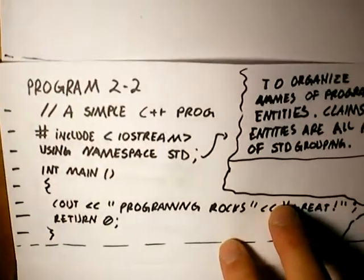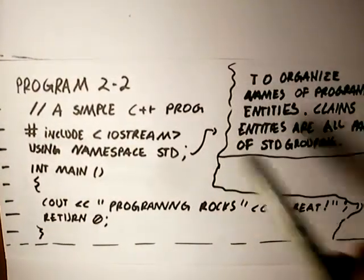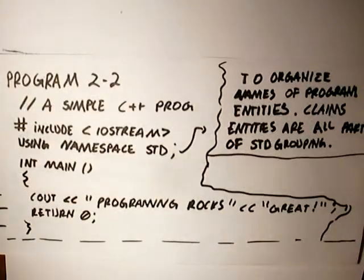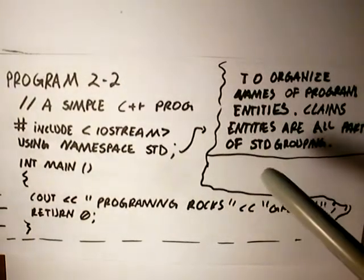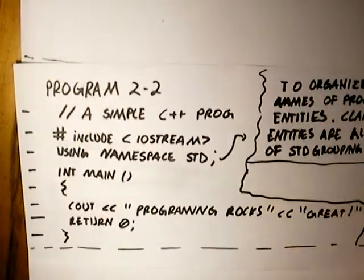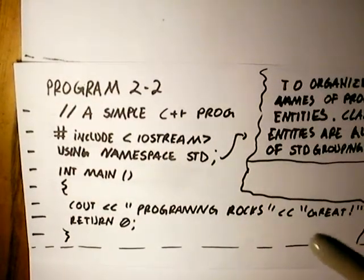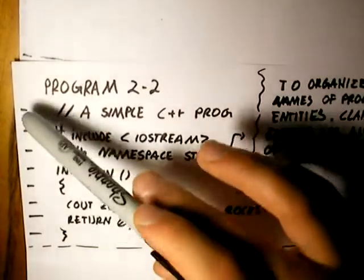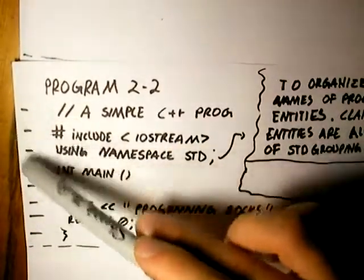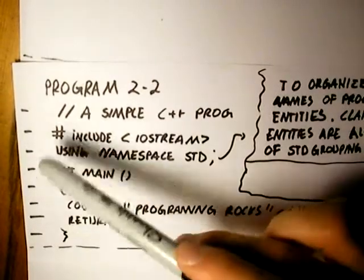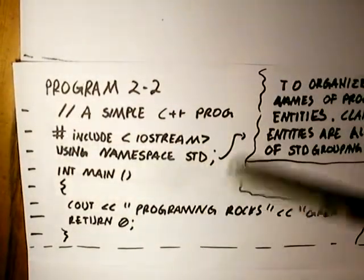Really quick, before we go any further, I just want to point out that you should ignore all this right here. I regret ever drawing that. It's a note to myself to explain a question that somebody had asked me. Over here on the left side, these lines are just to show you how the compiler works.